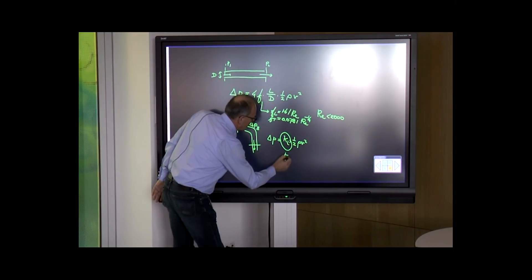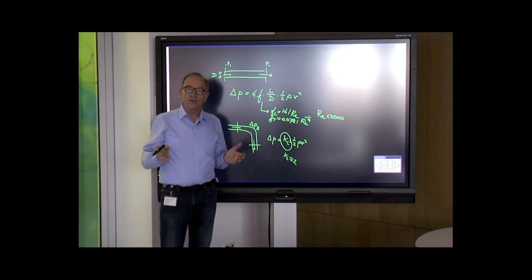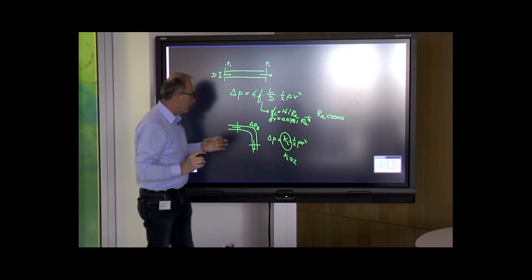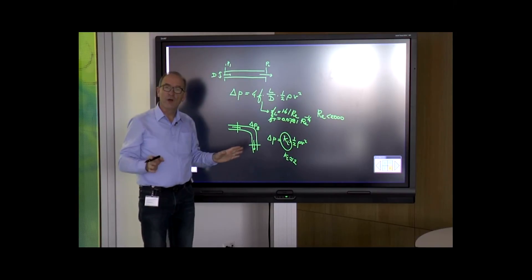For a 90-degree bend, KL is roughly 2. For one bend and one straight pipe, we can calculate the pressure loss. The total pressure loss of a pipe and a bend is the sum of those.